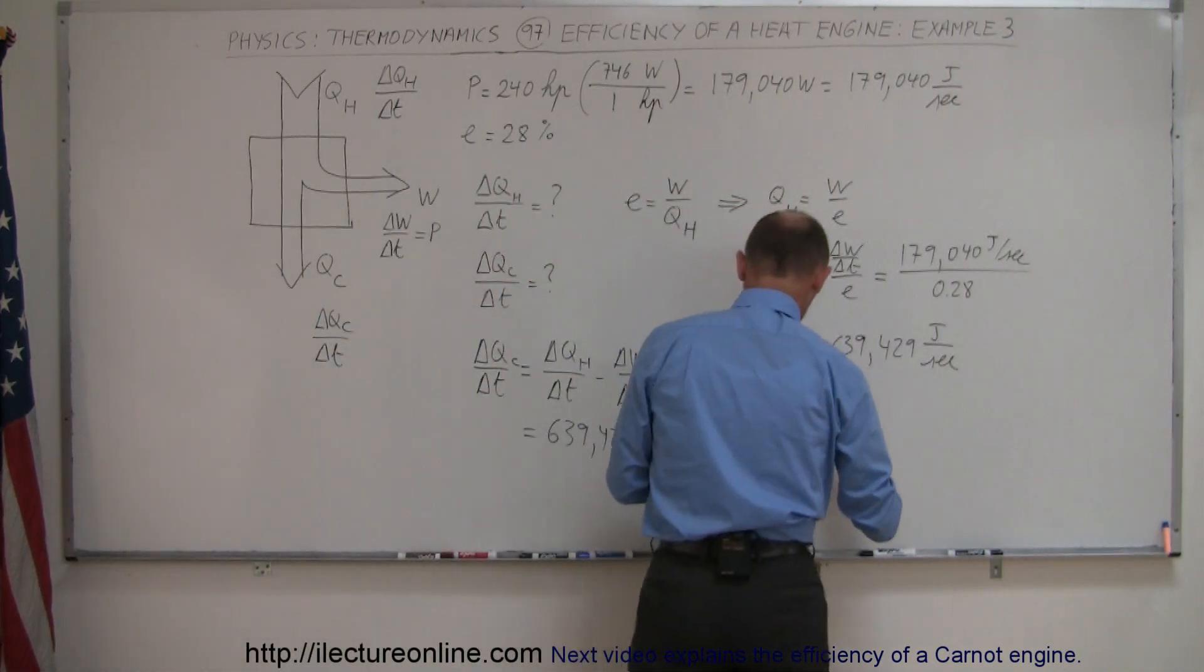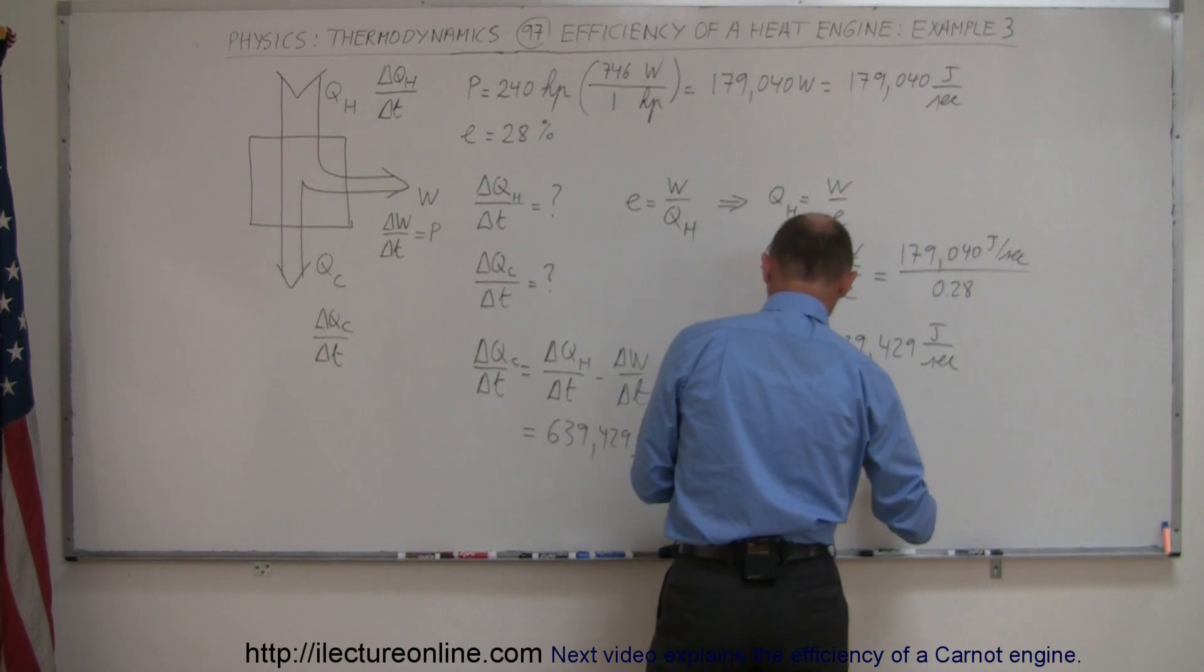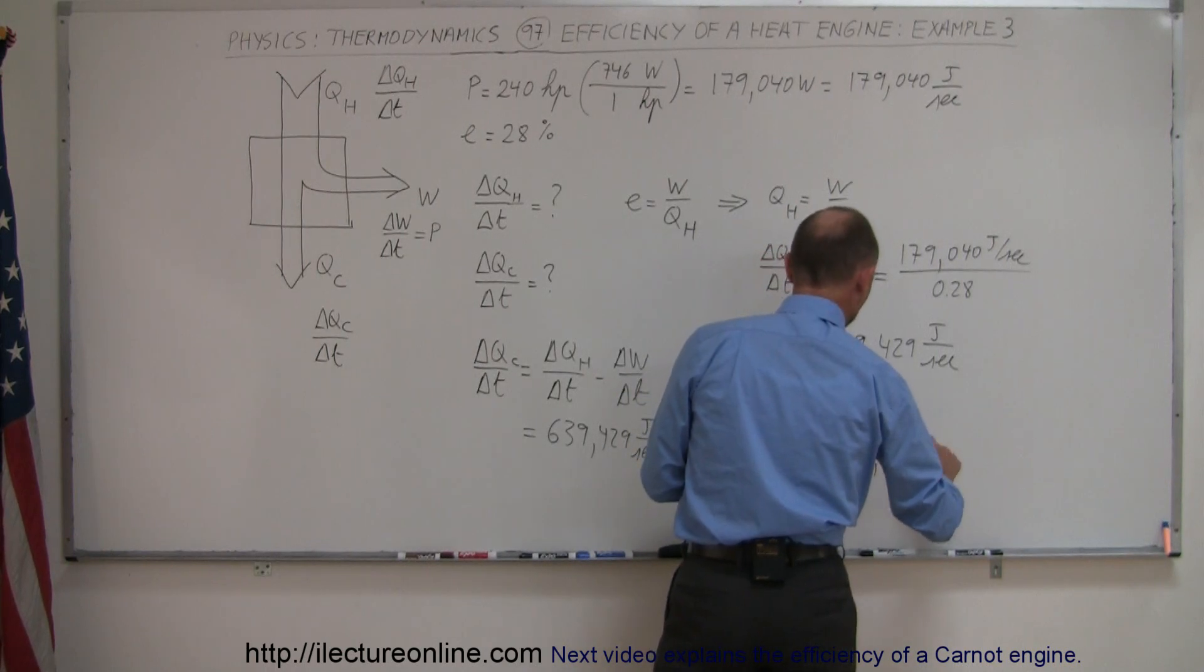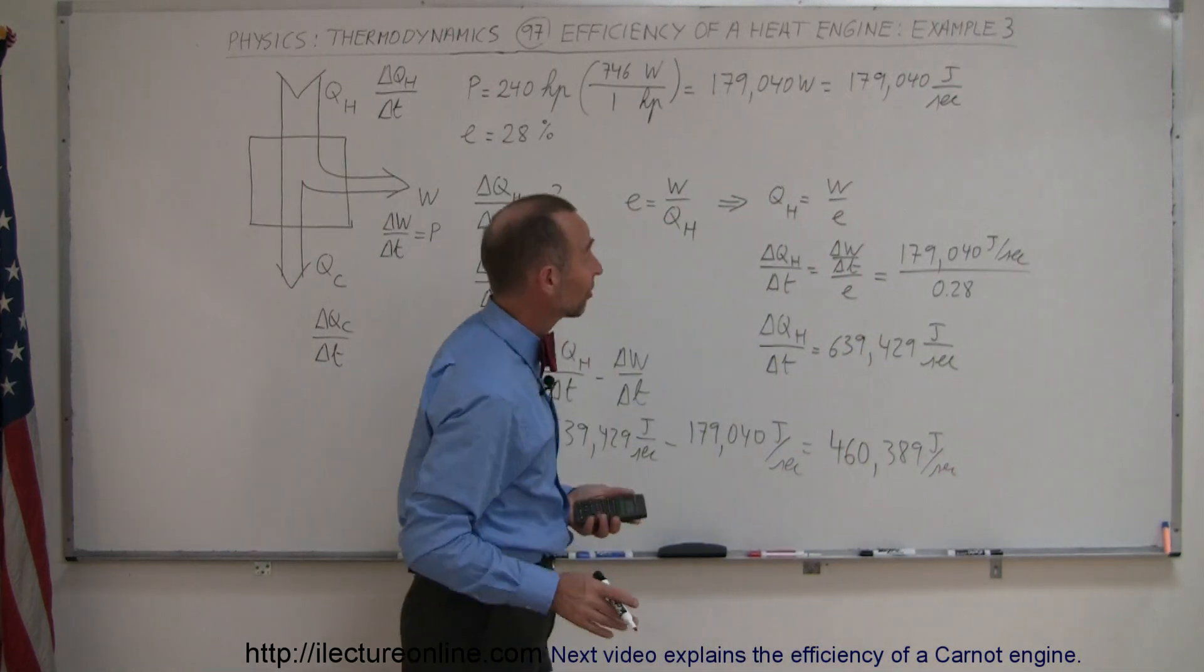and so round it off, well first we'll write 460,389 joules per second. So of course we want to round that off to maybe three significant figures,